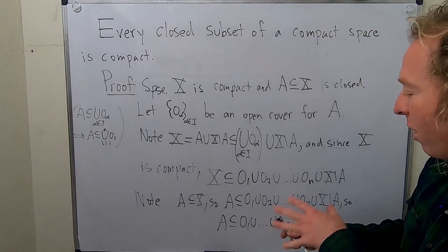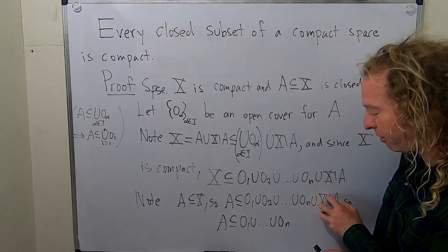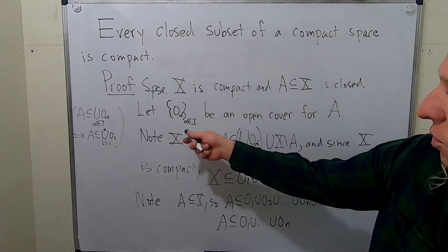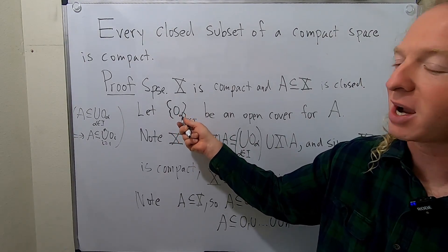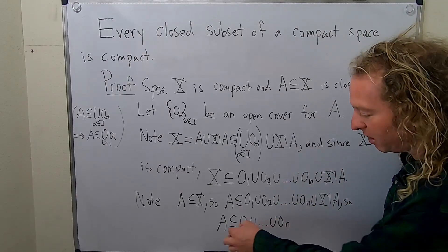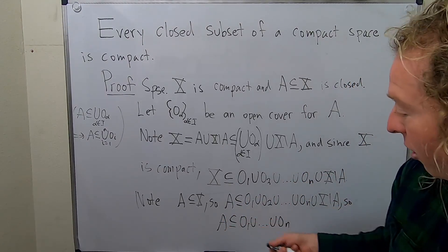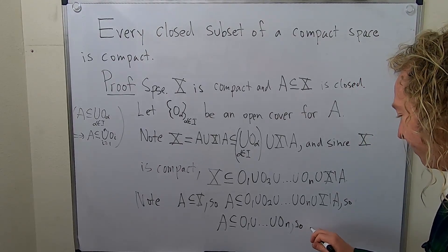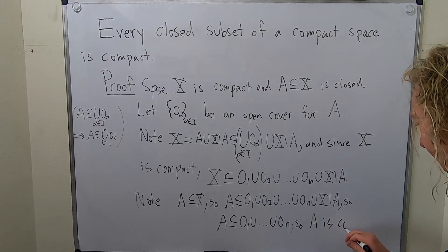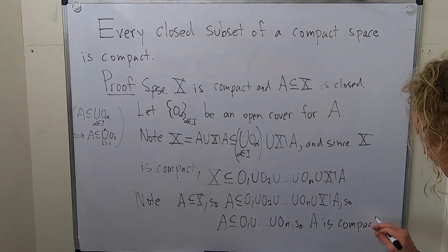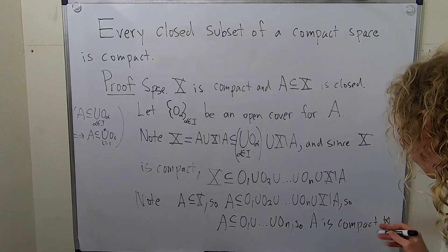So now we have what we want, right? I wanted to, I had to get rid of this because this is not part of the original covering. The original covering was this. It's only O's. There's no X set minus A. So you can drop it because no elements of A reside inside this set. So we have a finite sub cover. So A is compact.